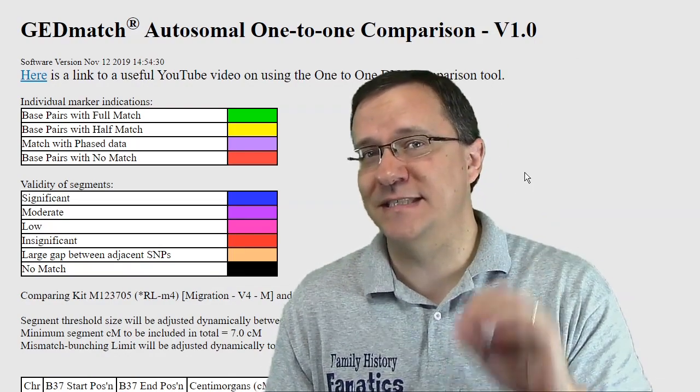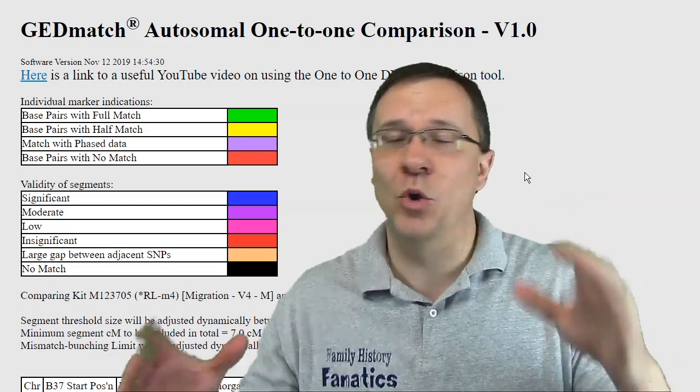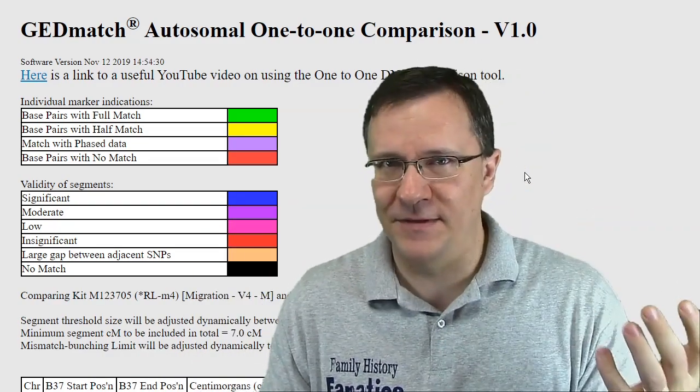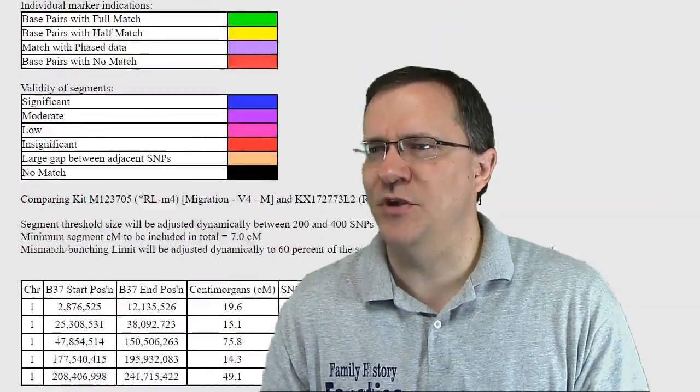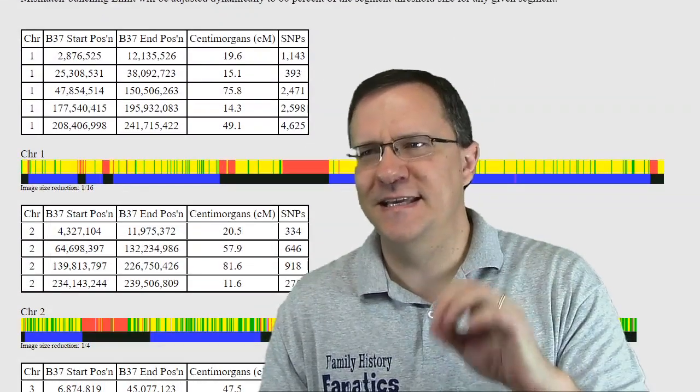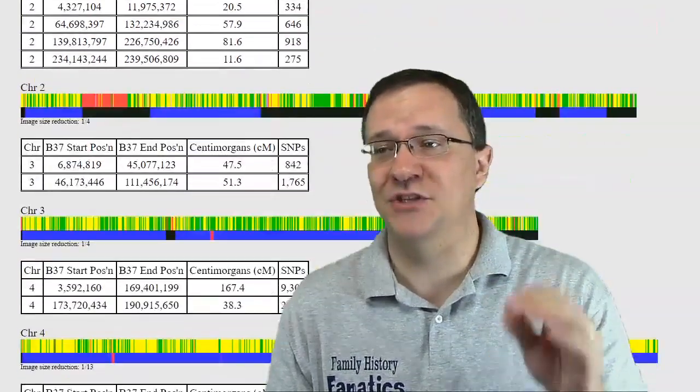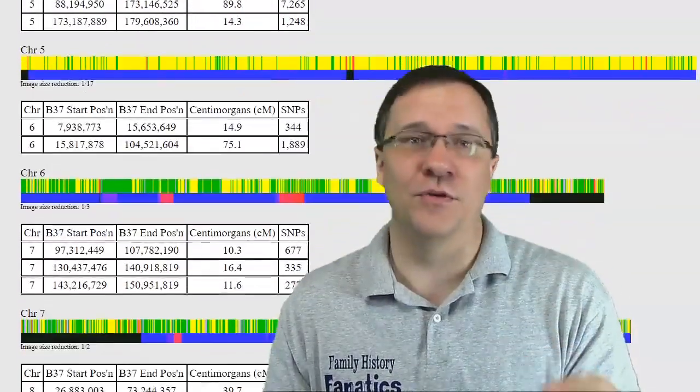And this had about the same amount of total SNPs now that my simplified kit had. But you can see there's a big difference. This kit still has a lot of half match on almost all of the chromosomes.